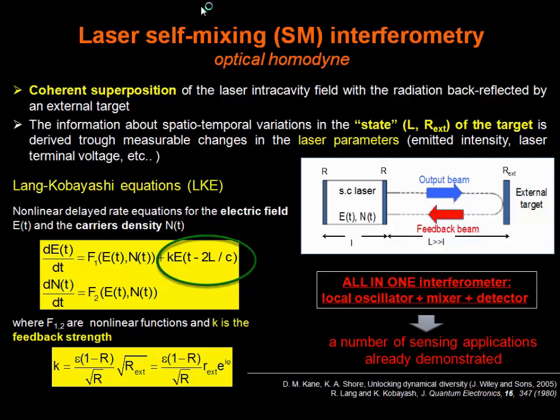The feedback effect is taken into account in these equations by delayed terms, which is K multiplied by E, that depends on the delayed field E — which depends on the distance between the external target and the semiconductor laser — and by K, which is basically proportional to the complex reflectivity of the external target. A modification or variation of the state of the target, in terms of distance between the target and the laser, or complex reflectivity, of course affects the steady-state characteristics of the laser.